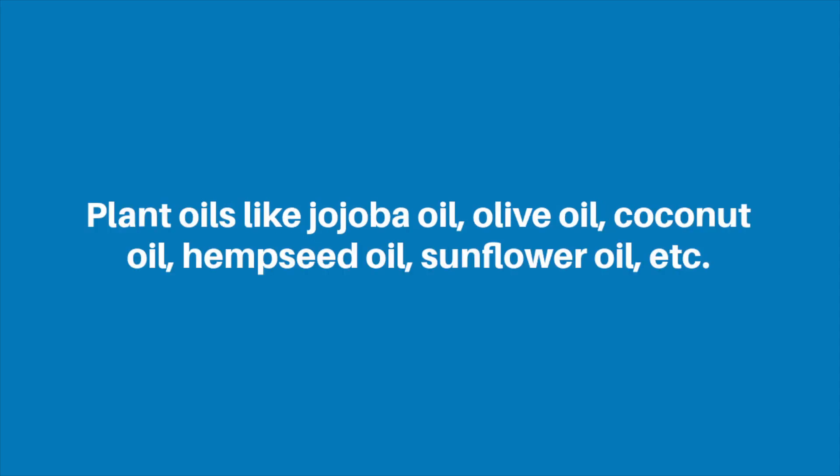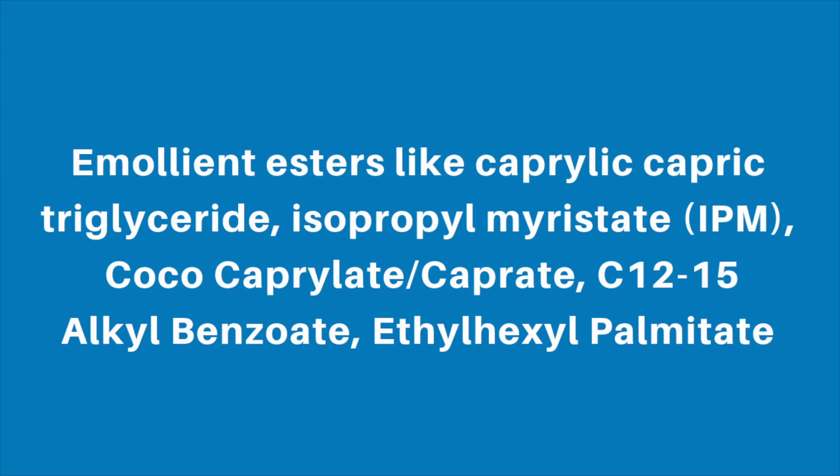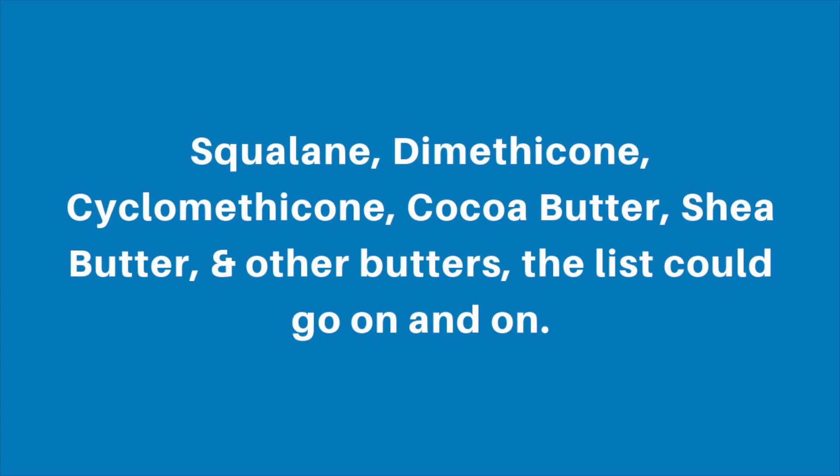Examples of emollients include plant oils like jojoba oil, olive oil, coconut oil, hemp seed oil, and sunflower oil. Emollient esters like caprylic/capric triglyceride, isopropyl myristate (also abbreviated as IPM), coco caprylate/caprate, C12-15 alkyl benzoate, ethylhexyl palmitate, squalane, dimethicone, cyclomethicone, cocoa butter, shea butter, and many other butters — the list goes on and on.